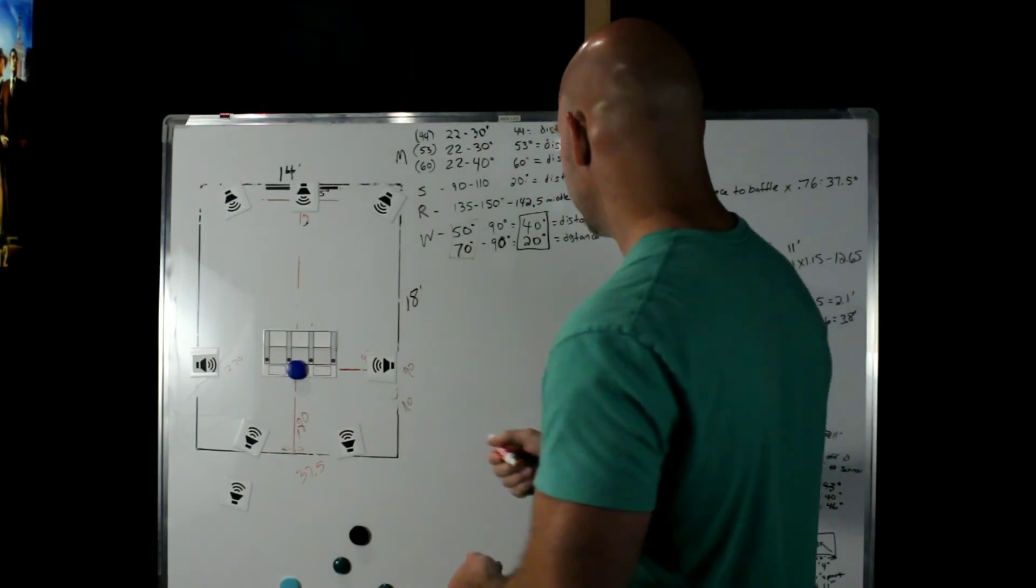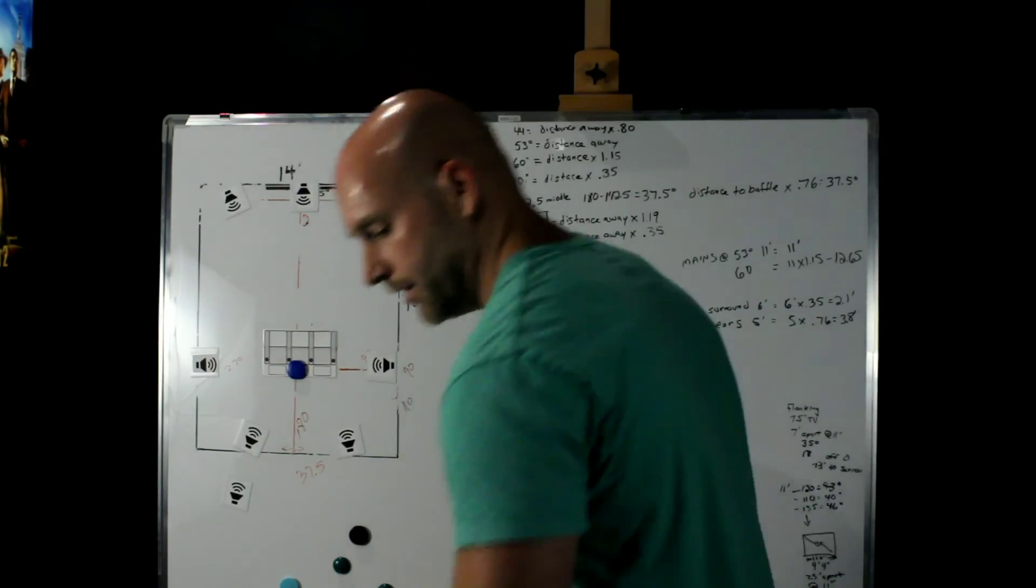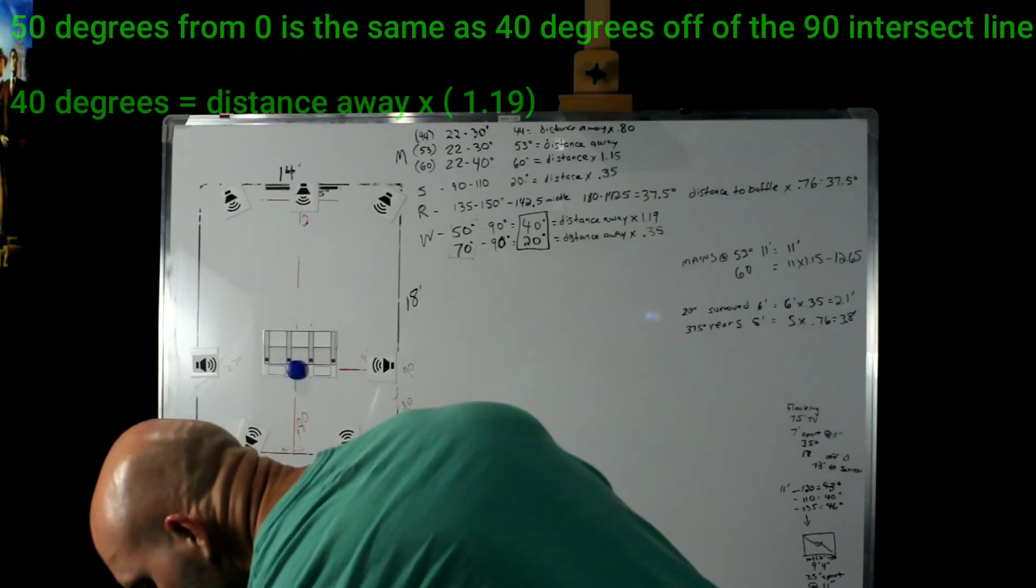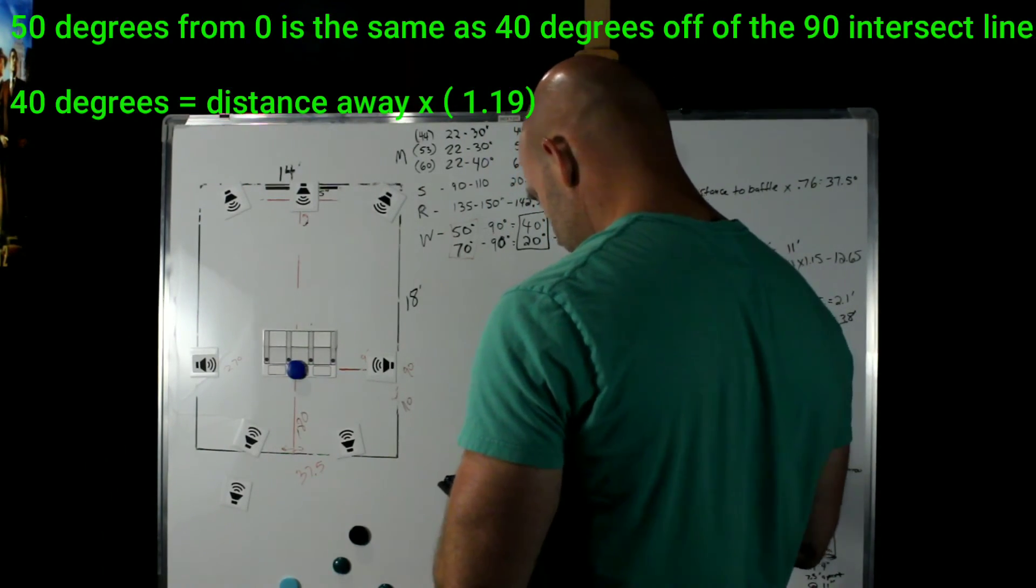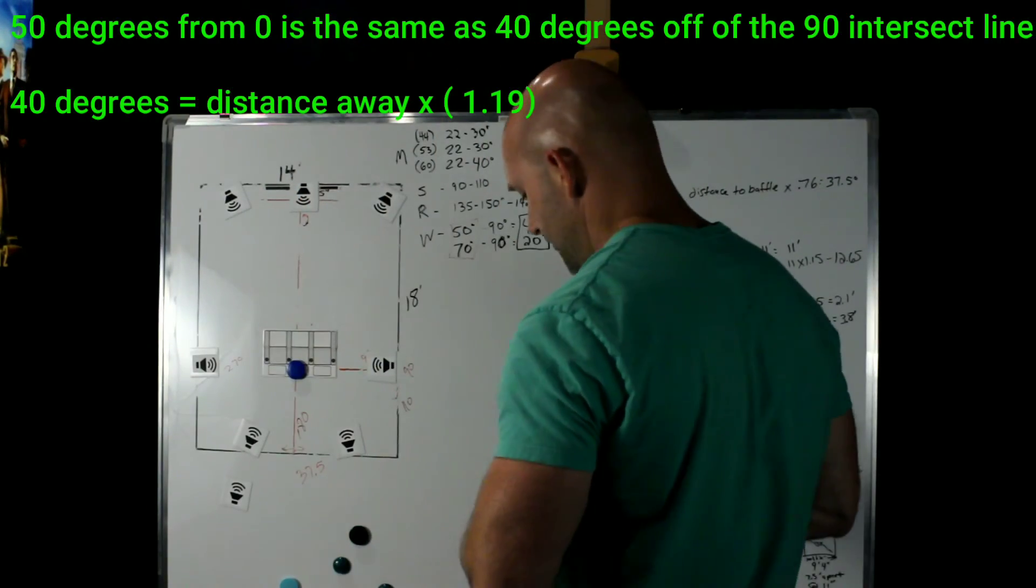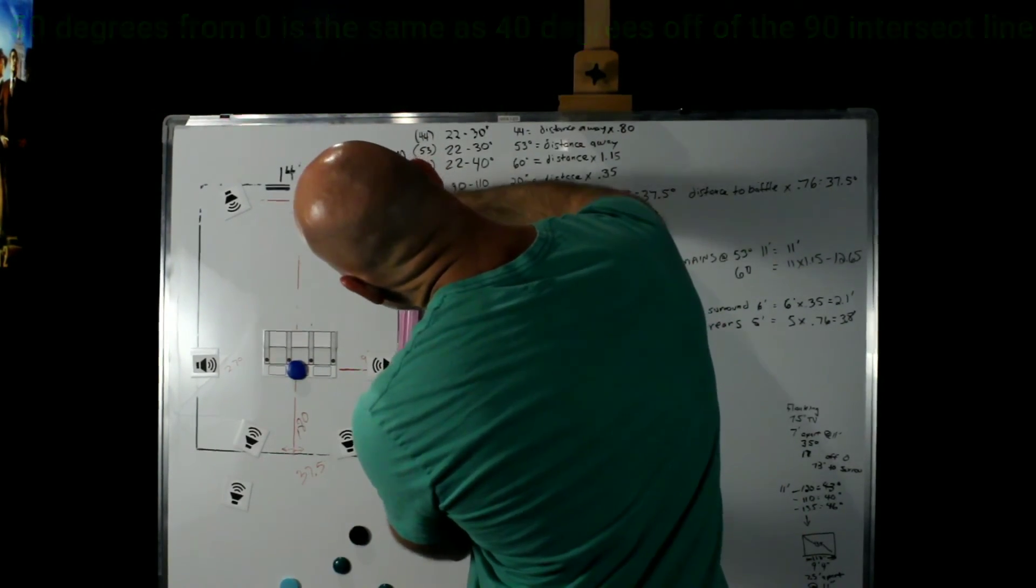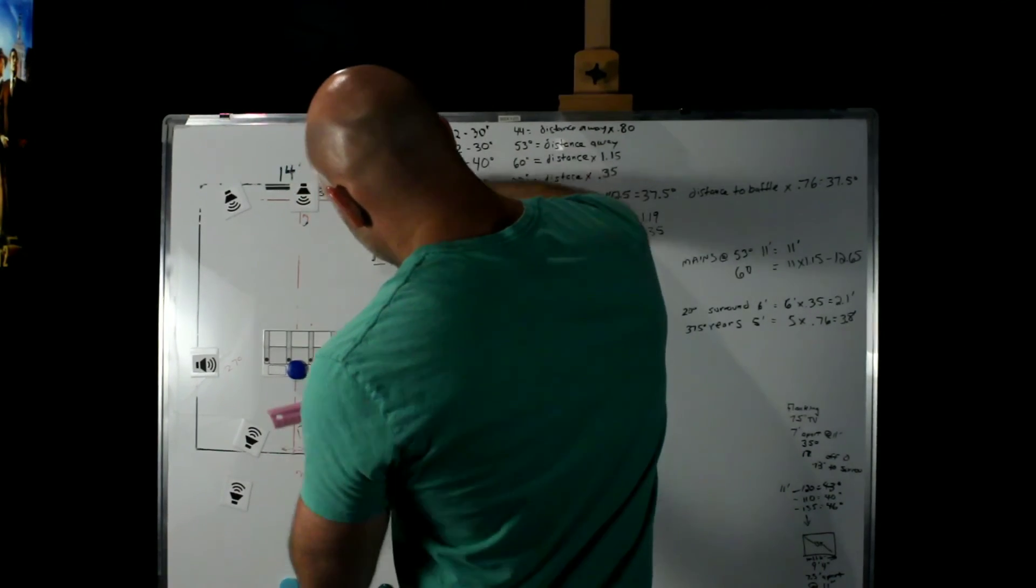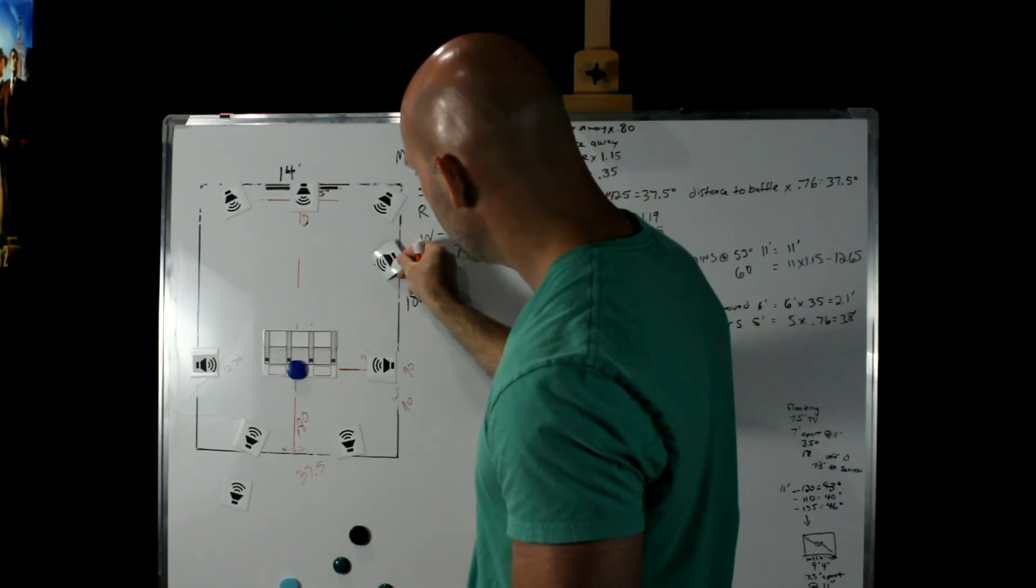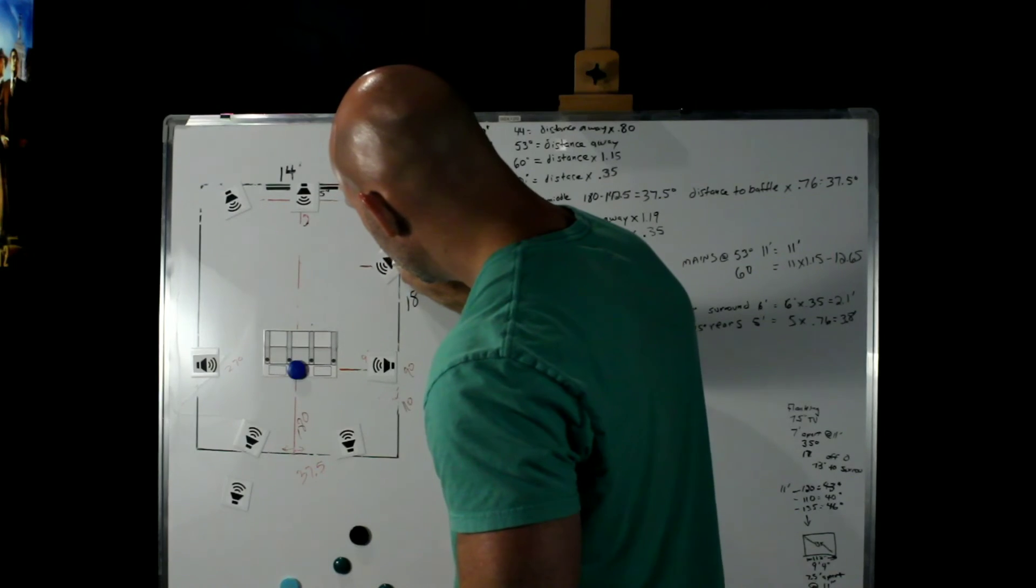But anyway, trust me, this is just the way it works out. So if we want to find 50 degrees, we can come 40 off of here and that's going to be the distance away times 1.19. So again, we're still 6 feet away from our baffle. We're going to multiply that times 1.19. So 6 times 1.19 is 7.14 feet forward. So again, off of this 90 degree line, right here. So this is where, now we have to angle this. So this line right here is where the center of our speaker needs to be once it's toed in towards the main listening position. Let me kind of bring that out so you can see it. So that's going to be for our 40 degrees.